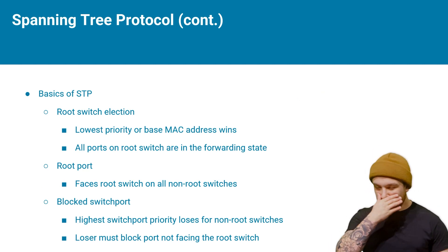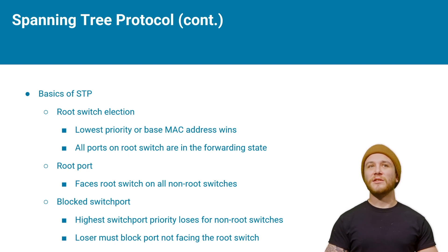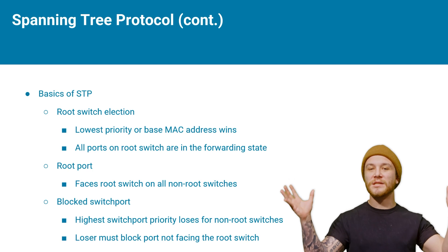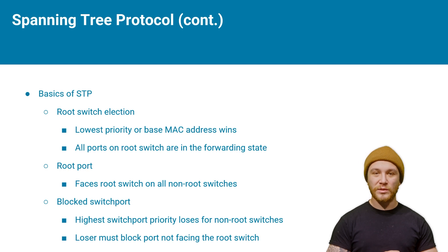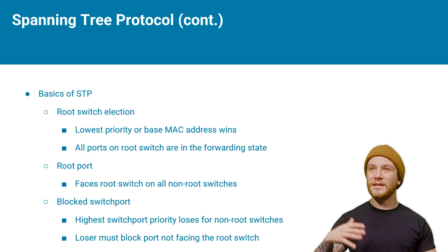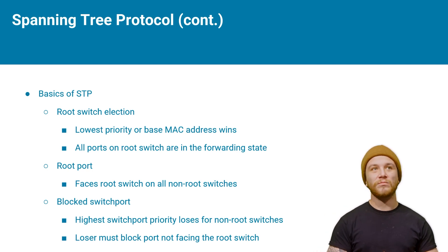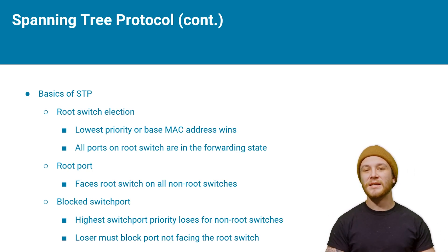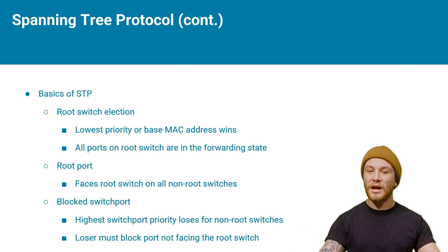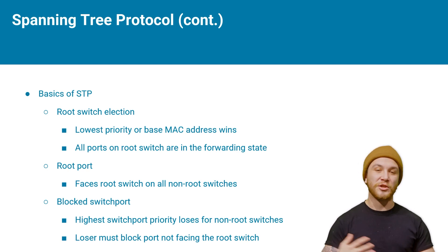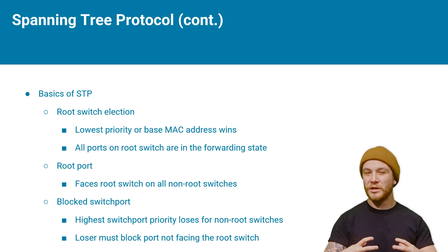Now the way spanning tree works — if you imagine a tree, you've got the root at the base and every branch spreads out from there. We have to define that root switch in our spanning tree topology. The way that works is the lowest priority, which is usually user-set, or the lowest base MAC address in the system chassis of the switch, will win. Let's say Switch 2 had a priority of zero — lower priority wins — so Switch 2 would become the root switch. The root switch sets all its interfaces to designated mode, meaning they are forwarding packets and sending/receiving BPDUs.